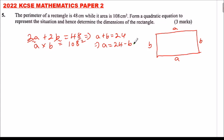We take this equation and substitute in this one. So this one will be 24 minus b multiplied by b equals 108. You open the bracket, you get 24b minus b² equals 108.